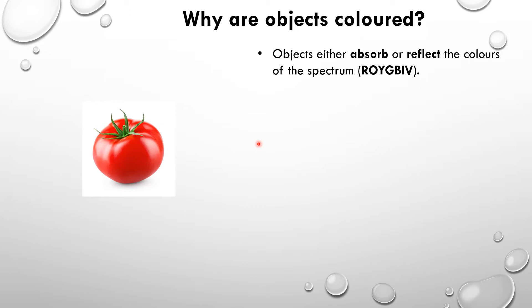Now objects can either interact two ways with white light. They can either absorb different colours of the light, or they can do both. They can absorb some colours and reflect other colours.